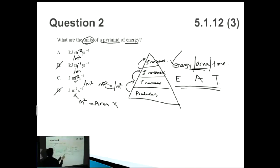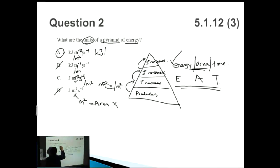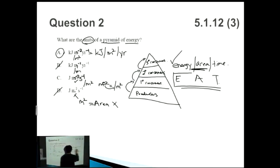Finally, looking at the time unit: comparing options A and C, option C has s to the minus one which is per second, and option A has per year. Option A is correct because a year is a more appropriate unit of time than a second for an energy pyramid. So the answer is kilojoules per meter squared per year — and just remember EAT: Energy per Area per Time, and the 'per' is very important.